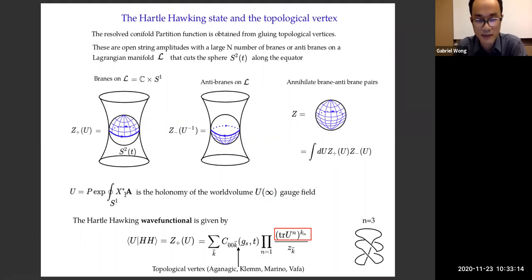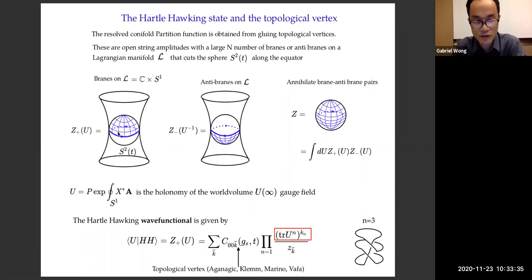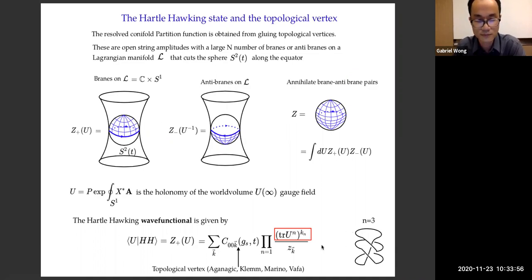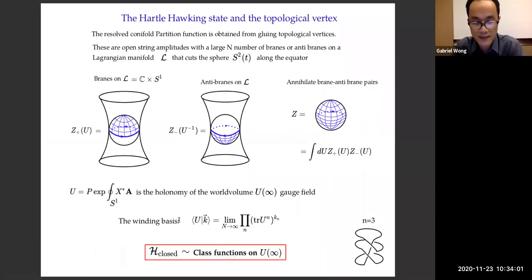Here U is the holonomy of the worldvolume gauge field on the branes — it's the gauge field in spacetime pulled back onto the boundary of the worldsheet via the embedding map. The Hartle-Hawking wave functional is Z-plus of U, obtained from the topological vertex expression. What matters is the trace U to the N factor that comes from coupling the boundary of the worldsheet to the holonomy of the gauge field. It is indeed a wave function of loops because if I pull back this U onto the worldsheet, it is a function on S1. The basis of states — the winding basis for the closed string Hilbert space — are given by multi-trace factors in the large-N limit. We identify the closed string Hilbert space with class functions on U(infinity).